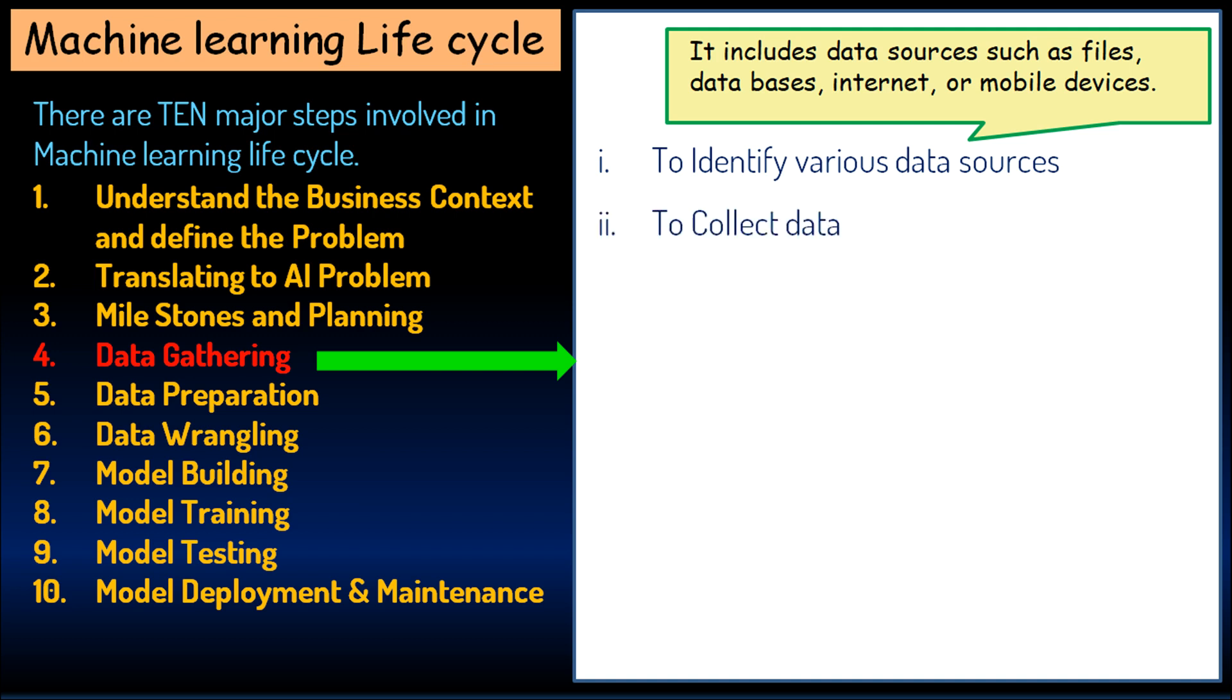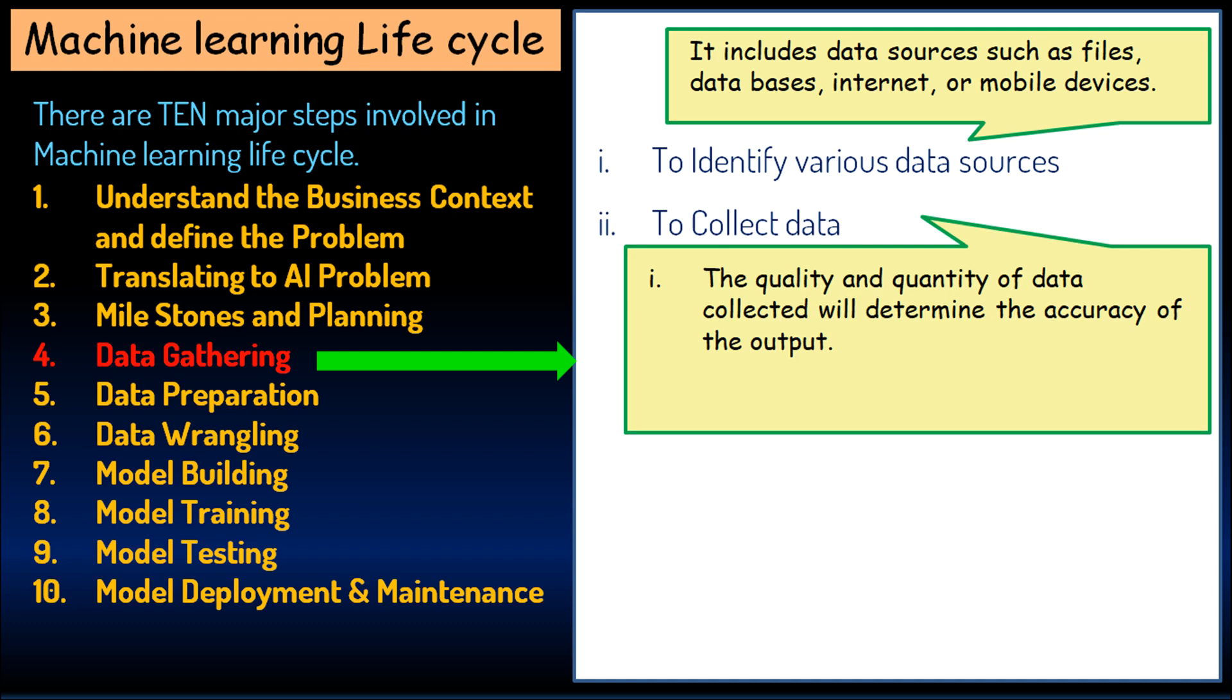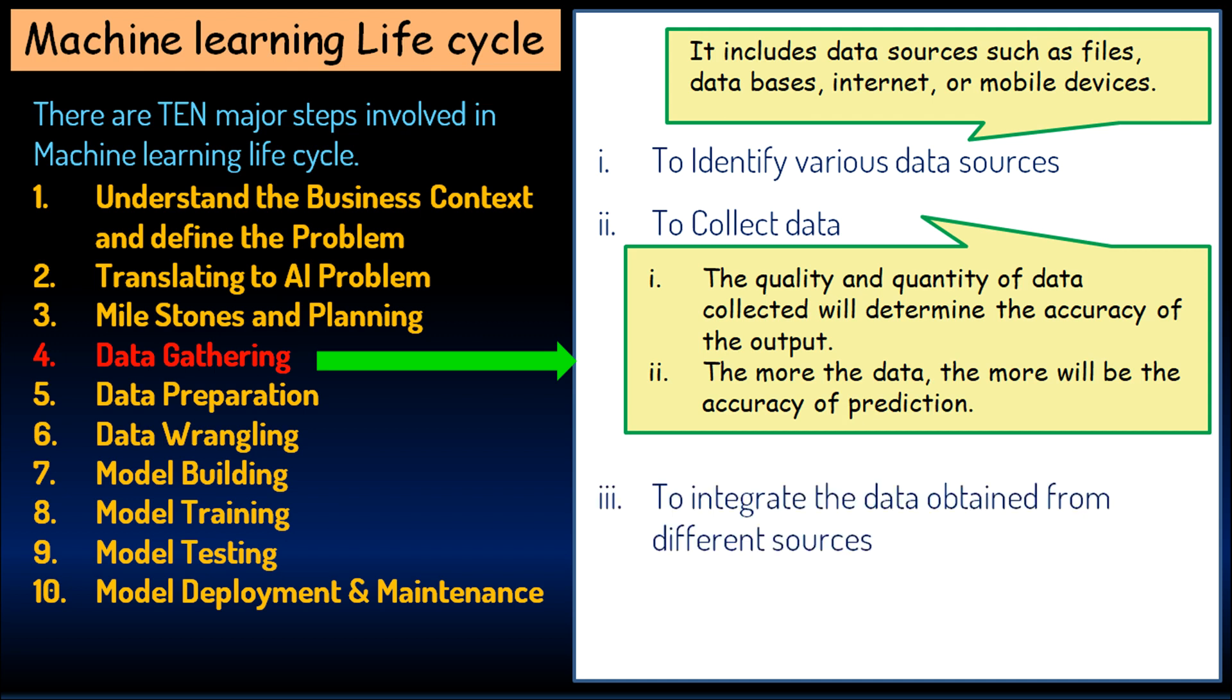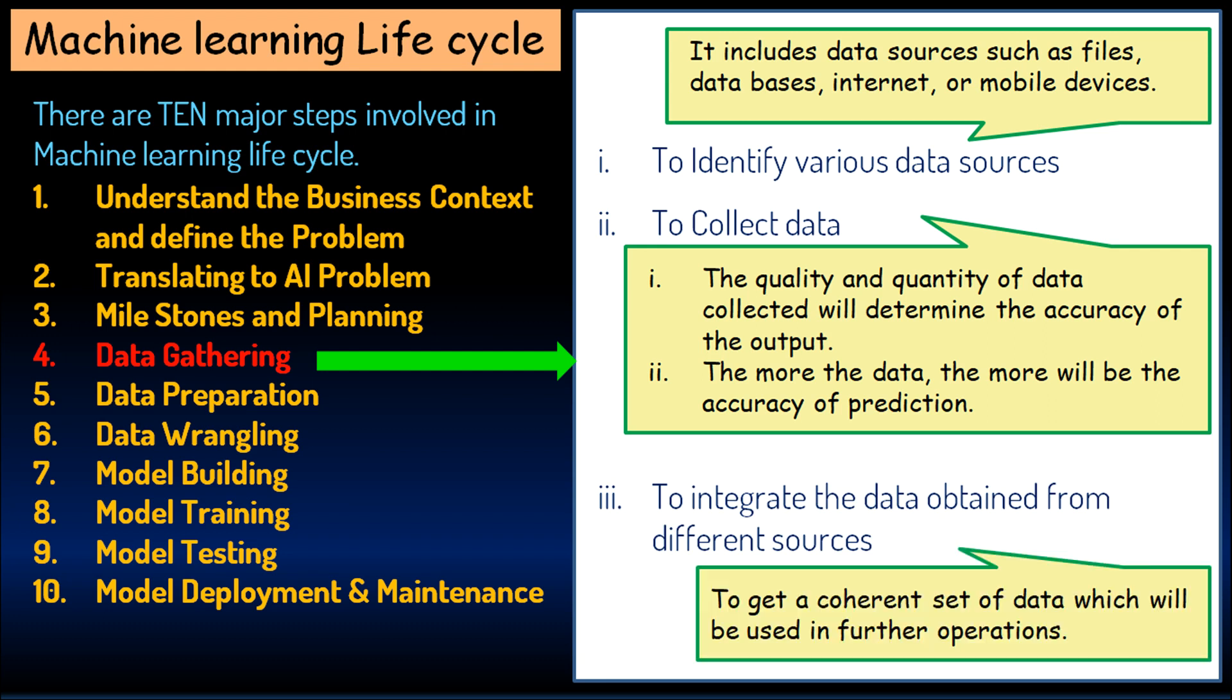To collect data, the quality and quantity of data collected will determine the accuracy of the output. The more the data, the more will be the accuracy of prediction. To integrate the data obtained from different sources, to get a coherent set of data which will be used in further operations.